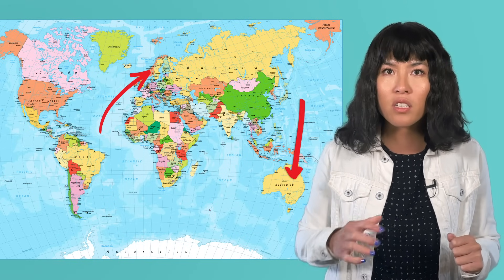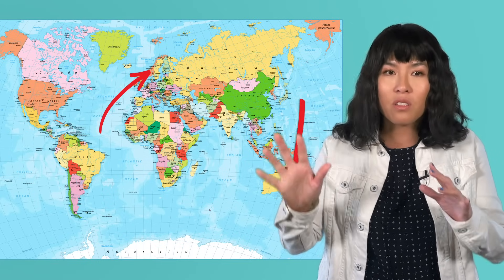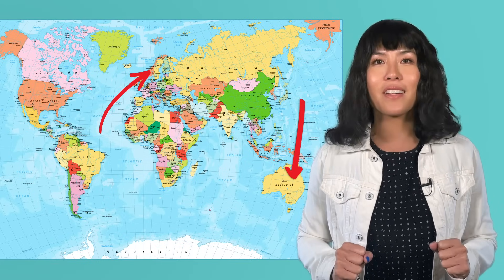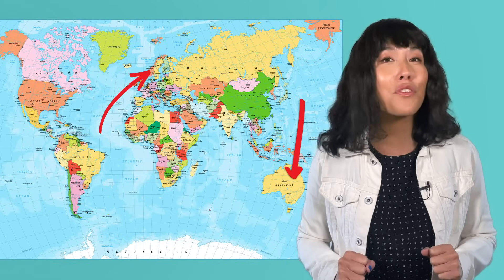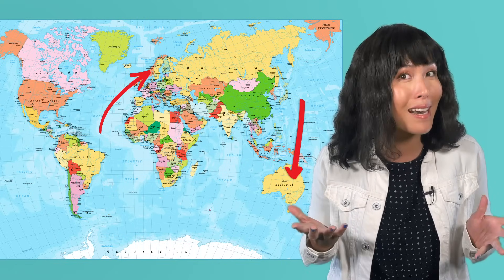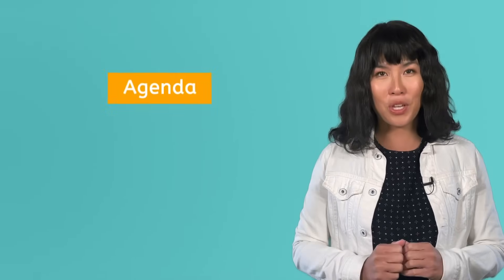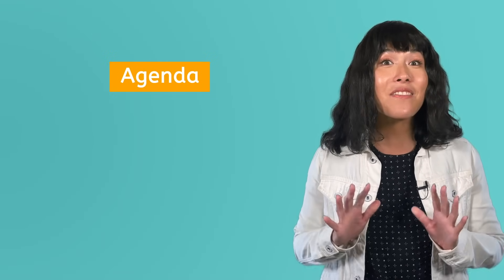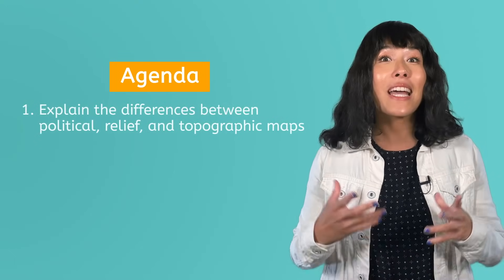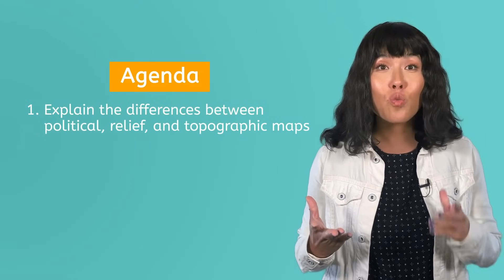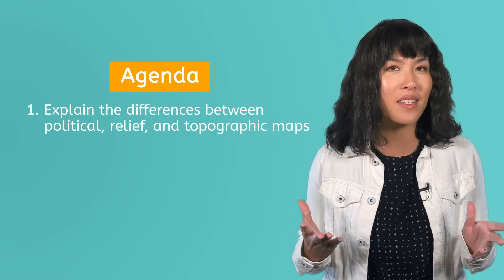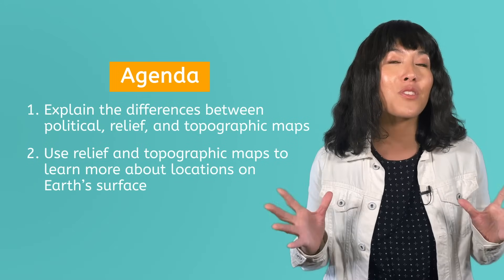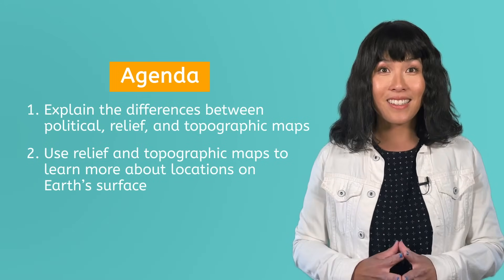How are we supposed to know where to find the highest cliffs or the longest mountain ranges? This might not be the right map to use, but luckily there are a few different kinds of maps that can help us find information like this. By the end of this lesson, you'll be able to explain the differences between political, relief, and topographic maps, and use relief and topographic maps to learn more about locations on Earth's surface.